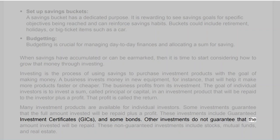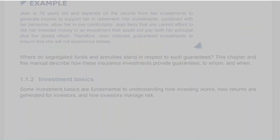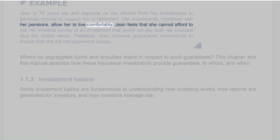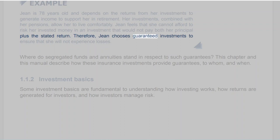Other investments do not guarantee that the amount invested will be repaid. These non-guaranteed investments include stocks, mutual funds, and real estate. For example, Jean is 78 years old and depends on investment returns for retirement income. She feels she cannot afford to risk her invested money in an investment that would not pay both her principal plus the stated return. Therefore, Jean chooses guaranteed investments to ensure that she will not experience losses.